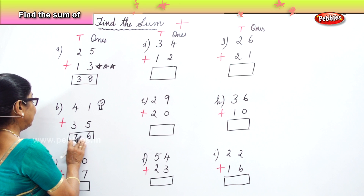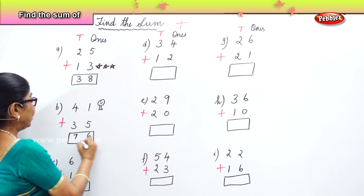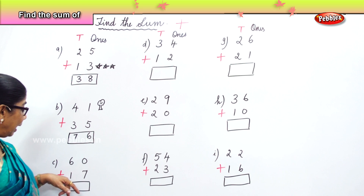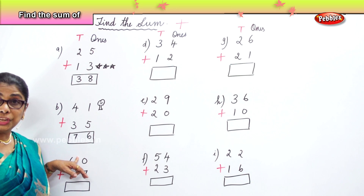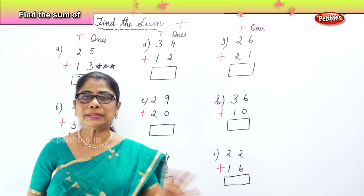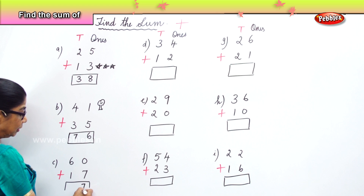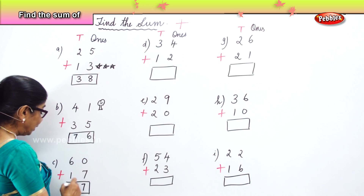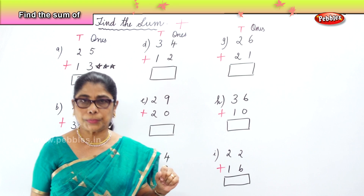Find the sum of sixty plus seventeen. In the ones place you have zero and seven. Any number plus zero is the number itself — that's what we need to remember. Then go to the tens: six tens and one ten. Six plus one is seven tens.